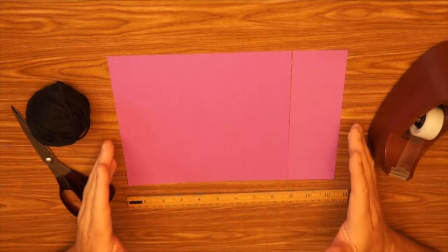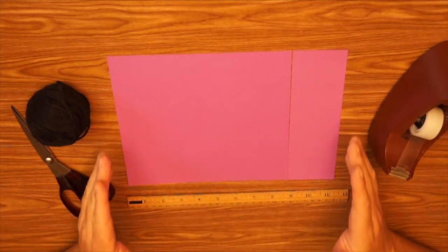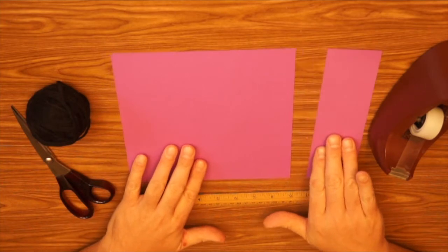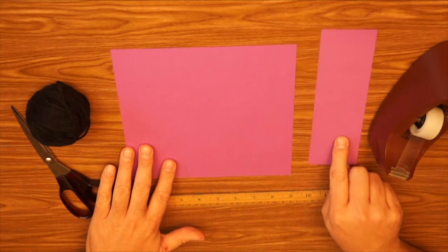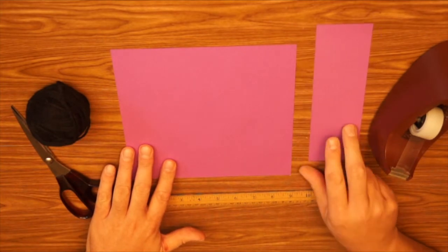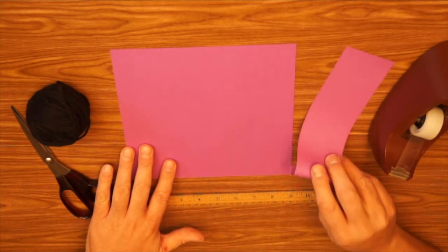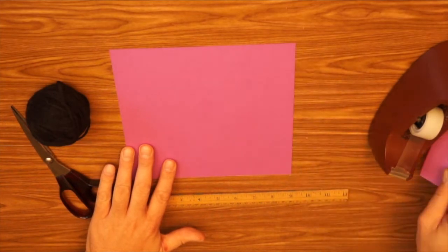The first thing I'm going to do is cut the 8 1/2 by 11 inch piece of copy paper into a square. So it's 8 1/2 inches by 8 1/2 inches. And this extra piece I can use when we get ready to make the tail for the kite. And so that's why I'm going to hold onto this until later.